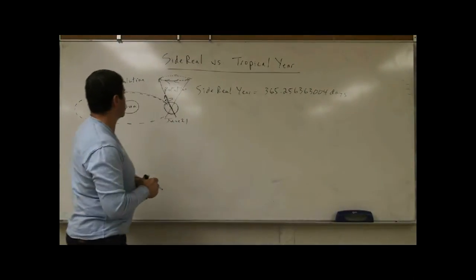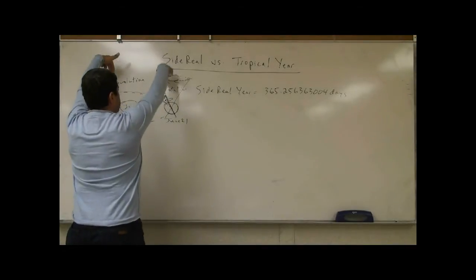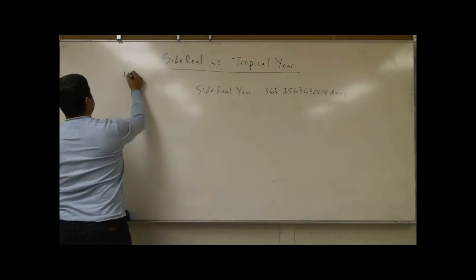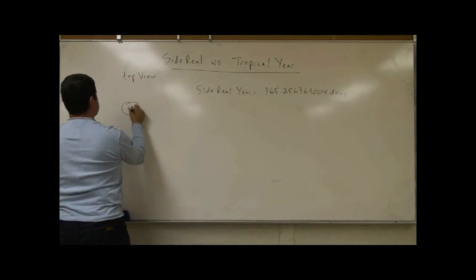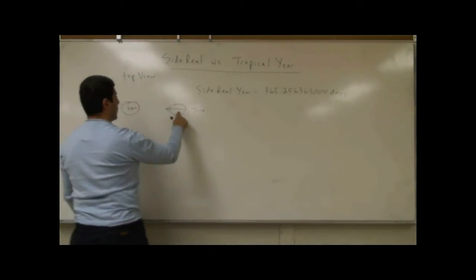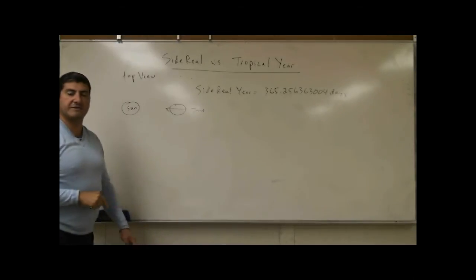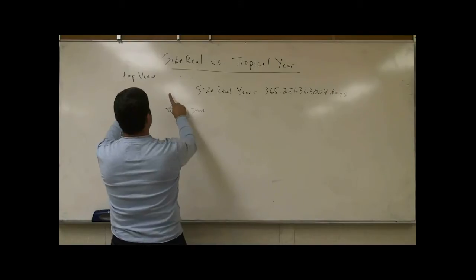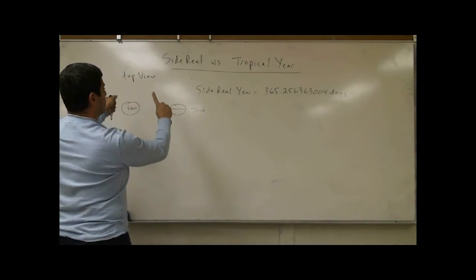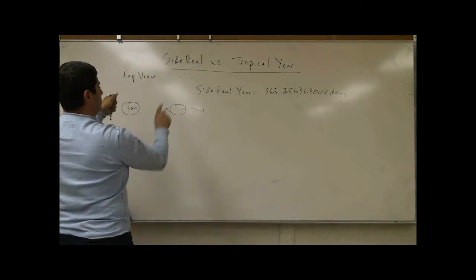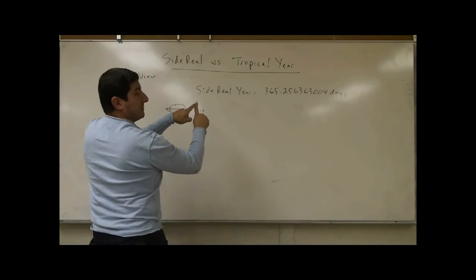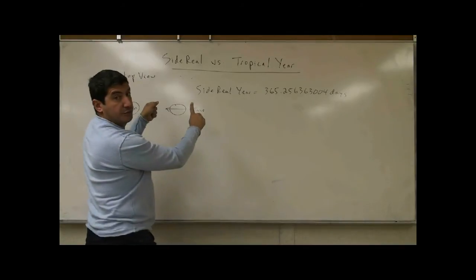To make things simpler, let's view this from the top. From a top view, on June 21, you have the Earth facing the sun. While the Earth goes around and comes back to the same point it began, the axis will have precessed a tiny bit. So the tropical year is going to occur before the sidereal year occurs — we're going to have to backtrack a little bit so that the Earth's axis is facing towards the sun again.